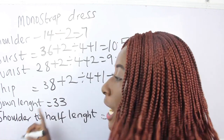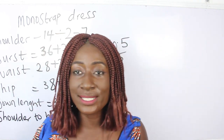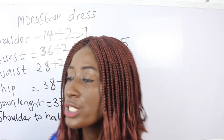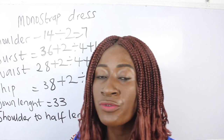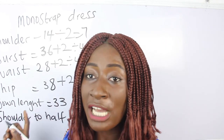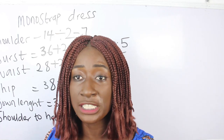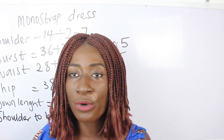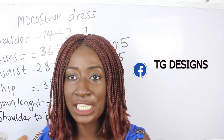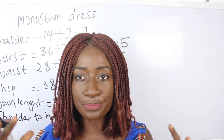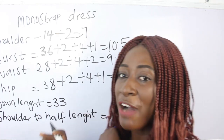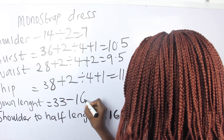Our gown length is 33 inches, measured from the shoulder. Our half length — from the shoulder to one inch above the navel — is 16 inches. To calculate the skirt section for pleating, deduct your half length from your gown length: 33 minus 16 gives 17 inches. Your half length is where we have the monostripe effect, and from half length to gown length is where we have the pleating.